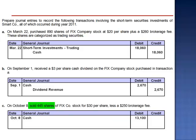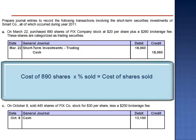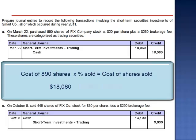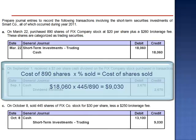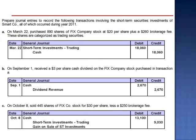We're selling 445 of the 890 shares purchased on March 22nd. This represents half of the portfolio. Therefore, we credit the short-term investment account for $9,030 — $18,060 multiplied by 445 divided by 890. And the difference is the gain on the sale of the short-term investments, $4,070.